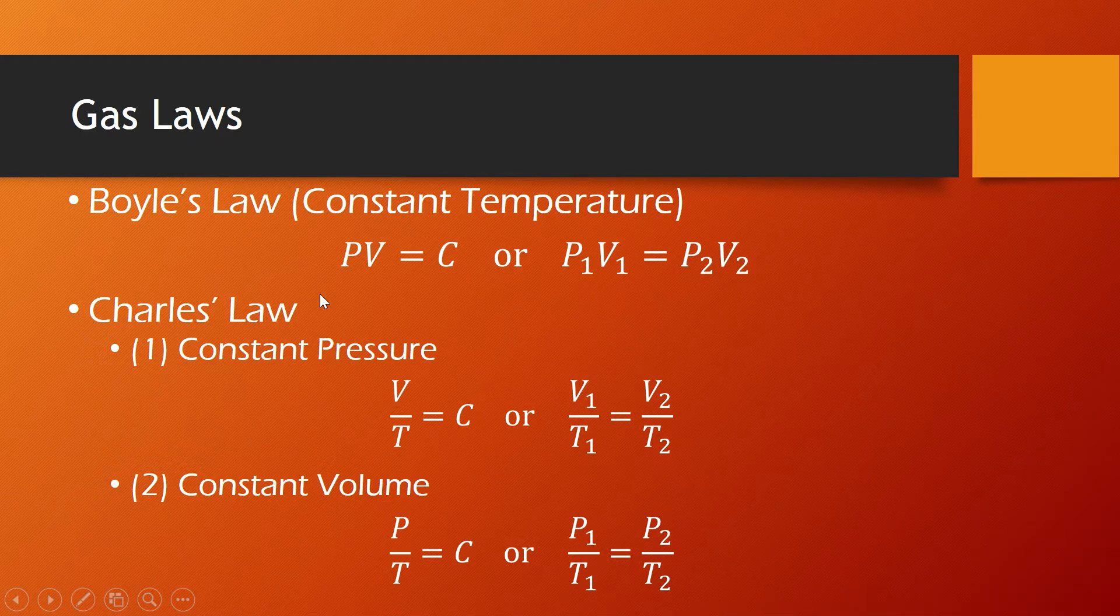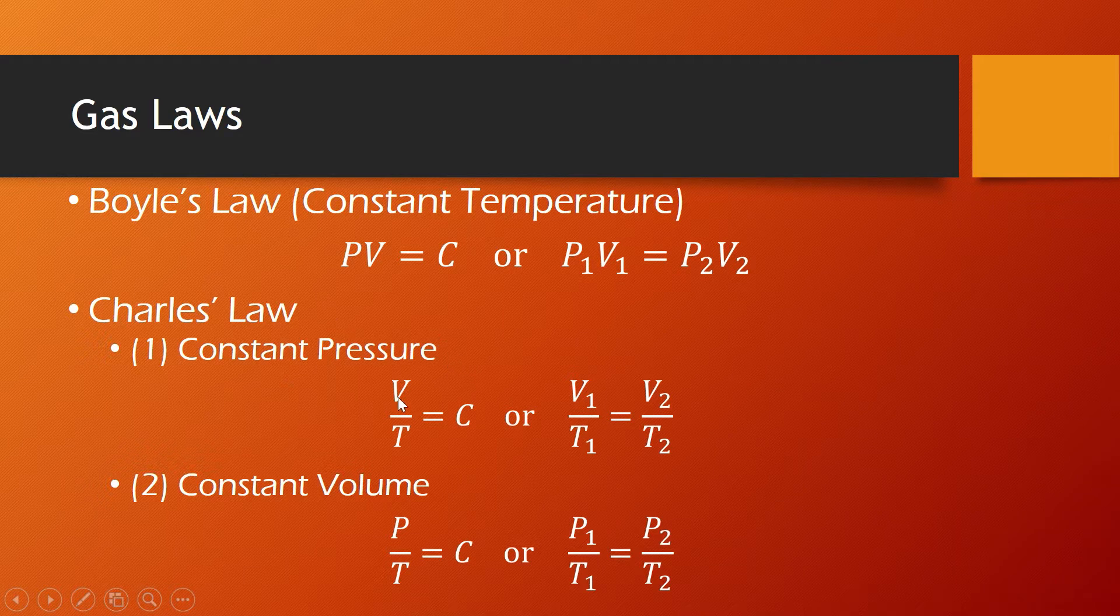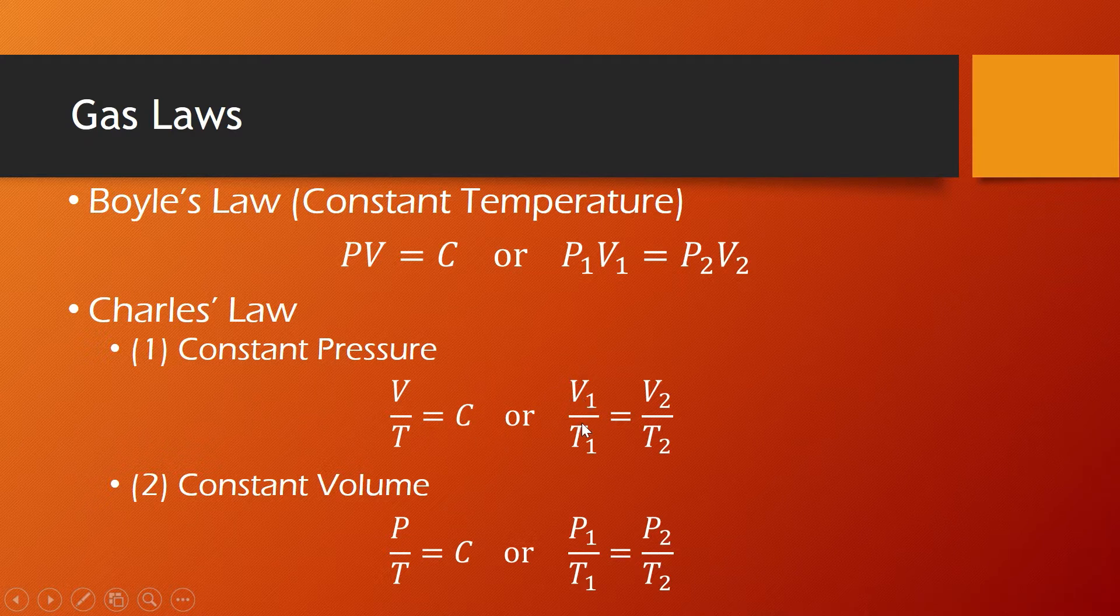And according to Charles' law, at constant pressure, volume over temperature is held constant. So V1 over T1 is equal to V2 over T2.